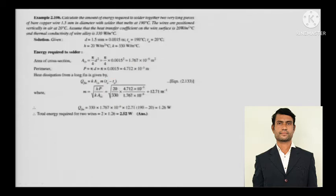Now for the first numerical: calculate the amount of energy required to solder two very long pieces of bare copper wire 1.5 mm in diameter, with solder that melts at 190°C. The wires are positioned vertically in air at 20°C. The heat transfer coefficient is 20 W/m²°C and thermal conductivity of the wire alloy is 330 W/m°C.